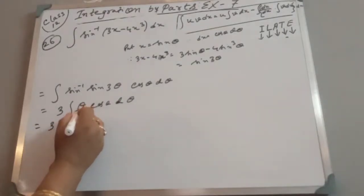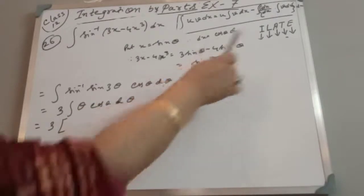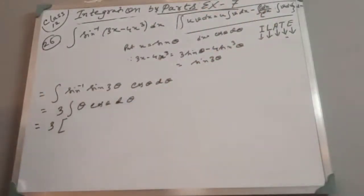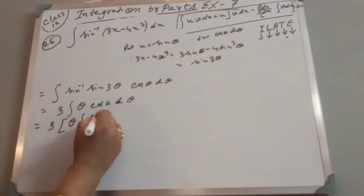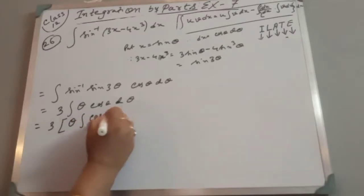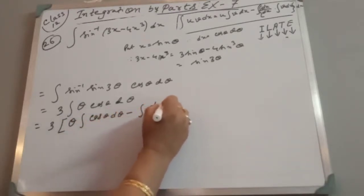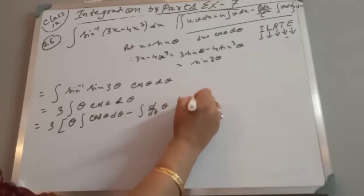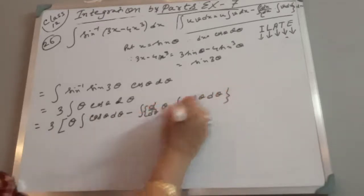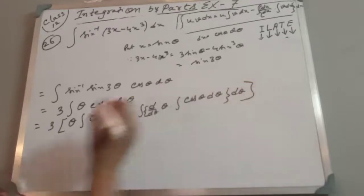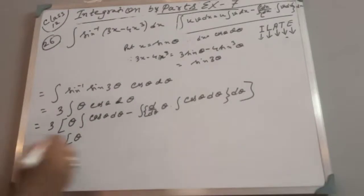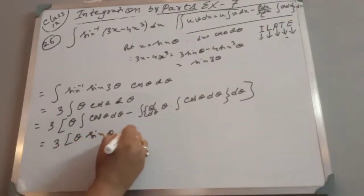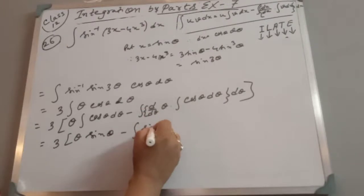This is an algebraic function (θ) and a trigonometric function (cos θ). According to ILATE, algebraic comes first. So θ is the first function (u) and cos θ is the second function (v): θ · ∫cos θ · dθ − ∫(1 · ∫cos θ dθ) dθ.